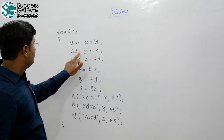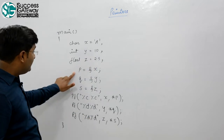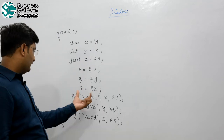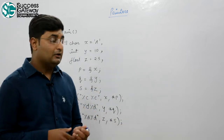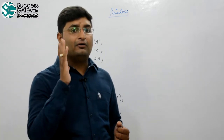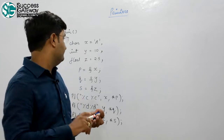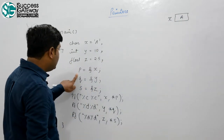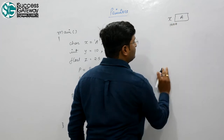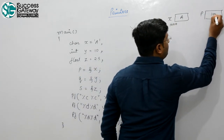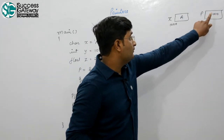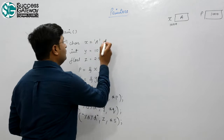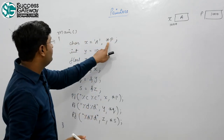Given: char x = 'a', int y = 10, float z = 2.5. p = &x, q = &y, s = &z. What are the declarations of p, q, and s? The declaration of a pointer depends on which type of address it holds. p holds the address of a character, so p should be a pointer to character — char *p.